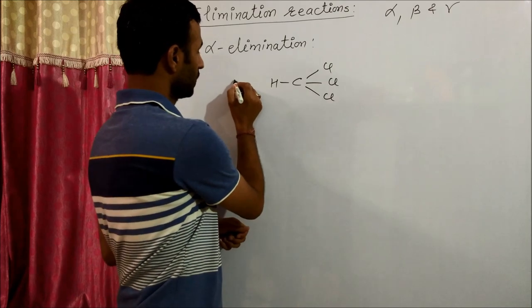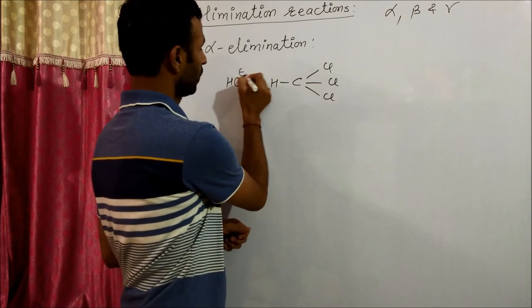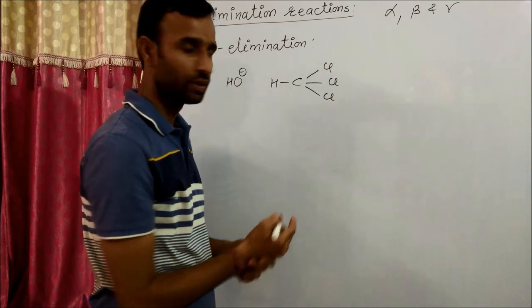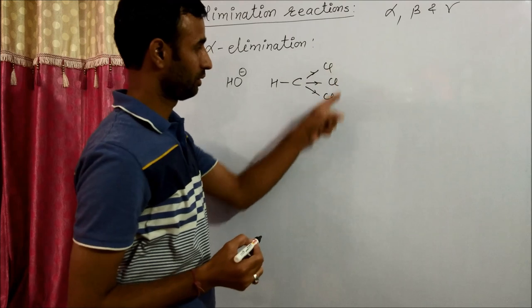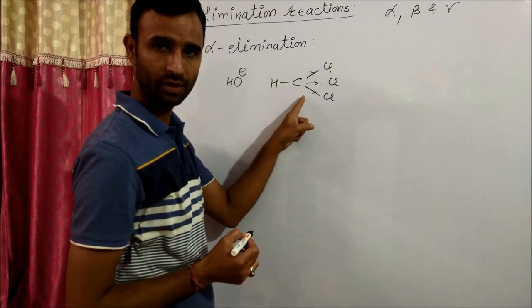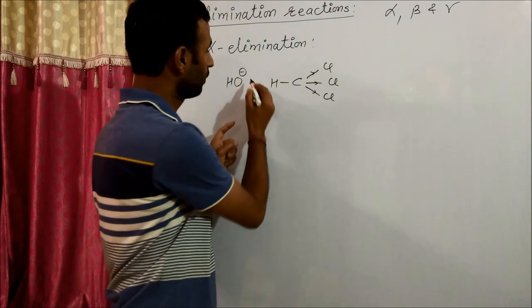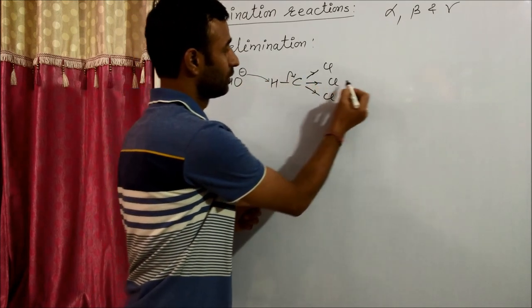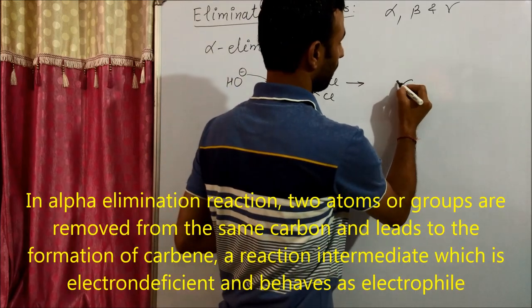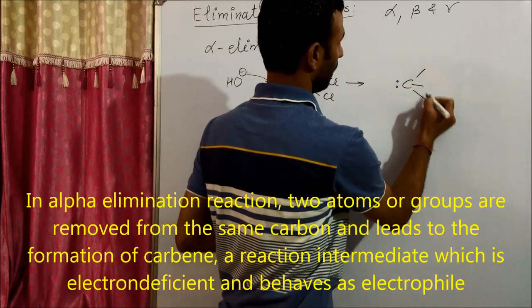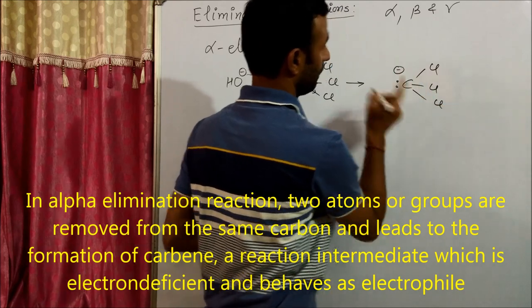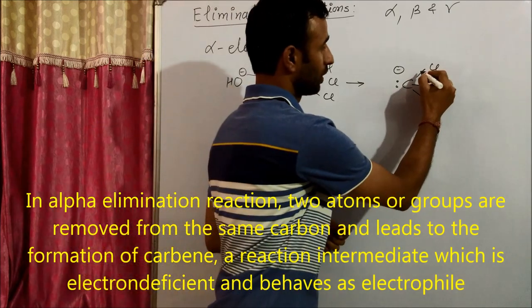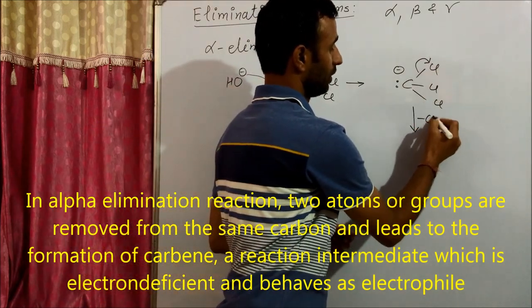In the presence of base like OH negative, these chlorine atoms are electron withdrawing groups. They make hydrogen acidic. Therefore, OH negative gets this H as H positive. This is the anion form, and then one Cl is removed as Cl negative.